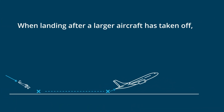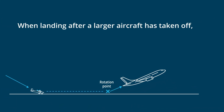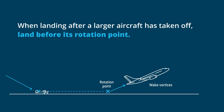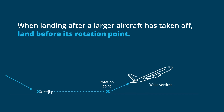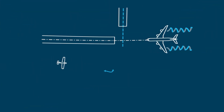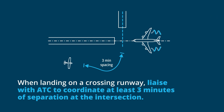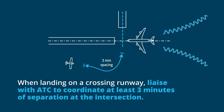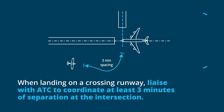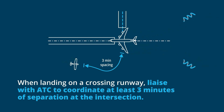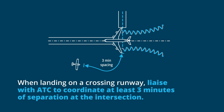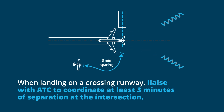When landing after a larger aircraft has taken off, land before its rotation point. When landing on a crossing runway, liaise with ATC to coordinate at least three minutes of separation at the intersection.